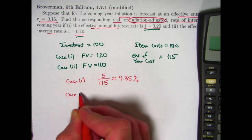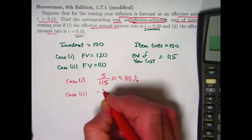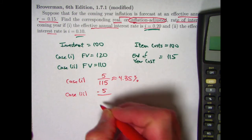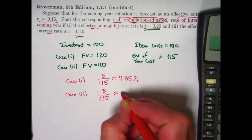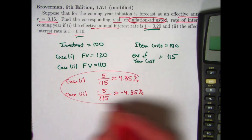In case two, again, your buying power has gone down. You can no longer afford this item. Your buying power has gone down, essentially, for that item by five. So the real rate of interest, or real rate of return, is going to be negative 5 over 115, which should then be about negative 4.35 percent. So those are the answers to the problems.